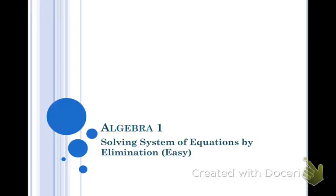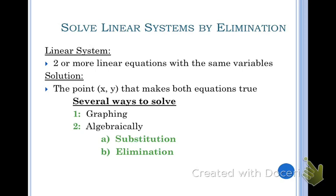The last way we are going to learn how to solve a system of equations is by a process called elimination. This is my personal favorite. I want to review real quick that a linear system is two or more equations with the same variables. The solution is always an ordered pair, an x and a y, that makes both equations true. We've learned how to solve graphically and by substitution, and now we're going to use an algebraic process called elimination.